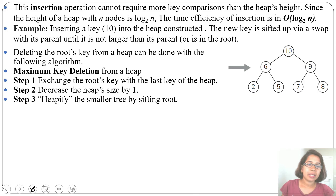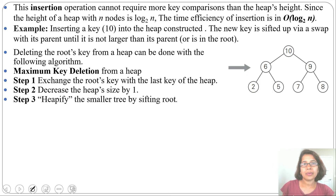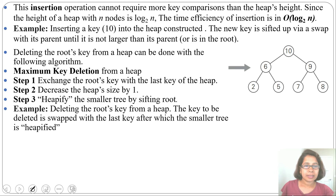So the three steps are: first, exchange the root with the last node; second, decrease the heap size; third, heapify to make it a valid heap again. Let's discuss an example — deleting the root key. The key to be deleted is swapped with the last key, after which the smaller tree is heapified.